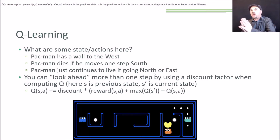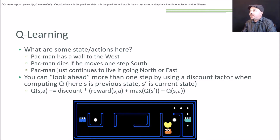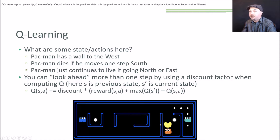We can use those Q values to inform Pac-Man's future choices and build a little intelligent agent that performs optimally. For example, we can define the current state of Pac-Man by the fact that he has a wall to the west, empty space to the north and east, and a ghost to the south. He can't move left at all, but he can move up, down, or right. Going up or right results in nothing happening — no reward. Going down toward the ghost is a negative value, so moving down would have a negative Q value, while moving up or right would remain zero.